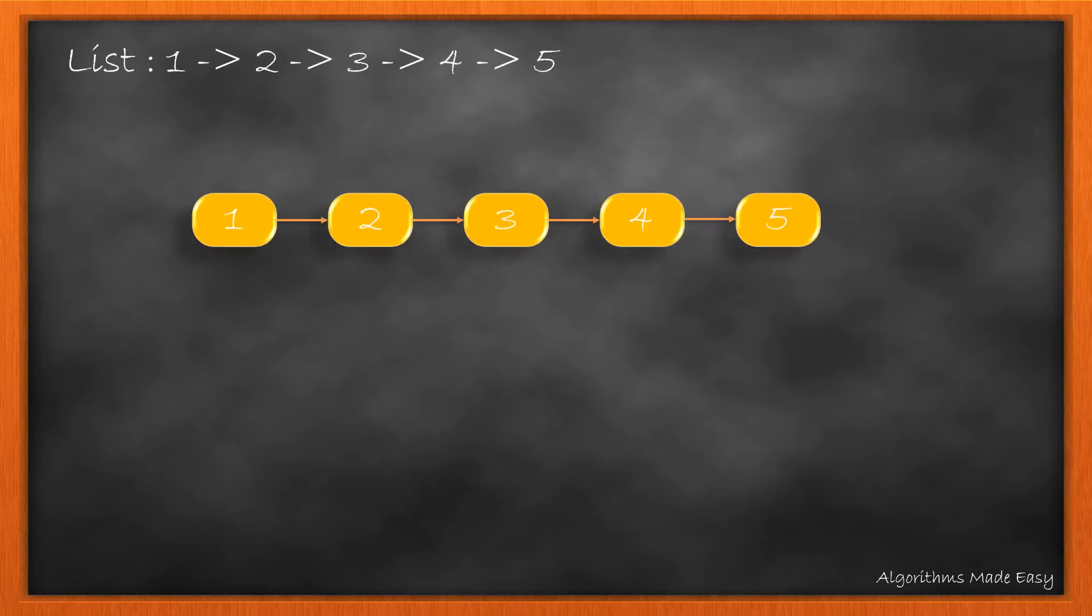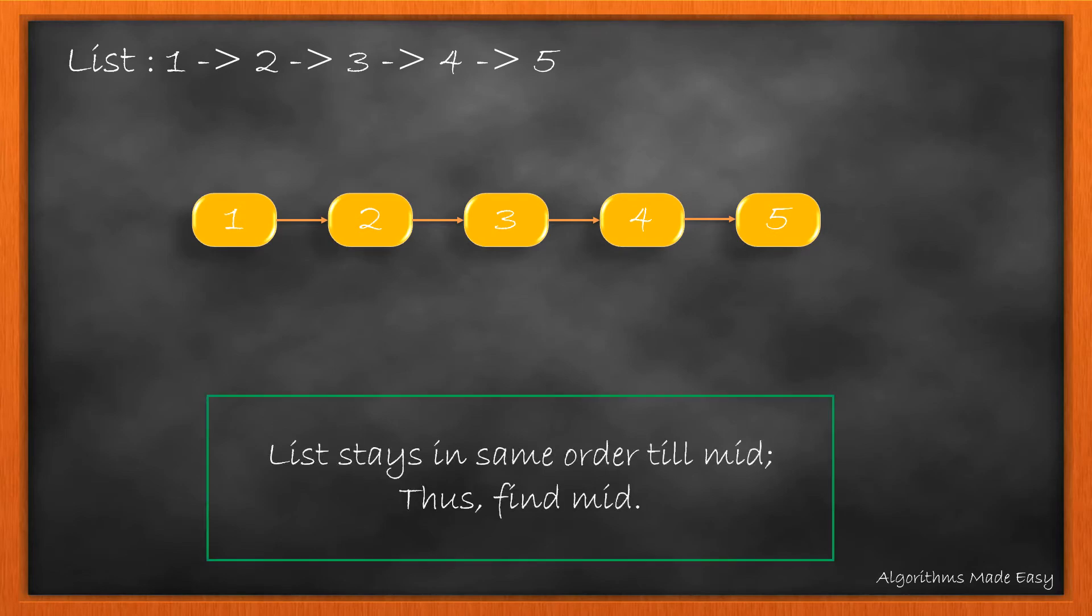Let's take this as an example. If we look at the output, we can see that the list stays in the same order till mid and the order reverses after it. Thus, we will first find the mid of the list.